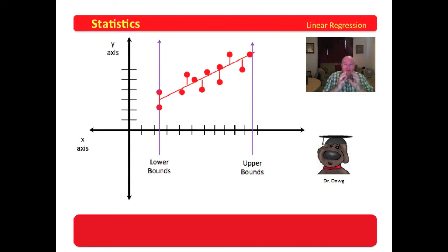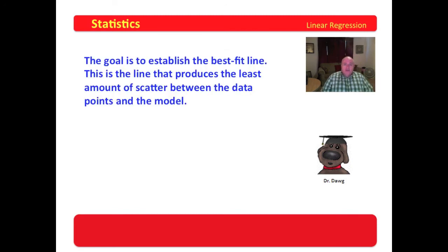When we look for the best fit line, we are looking for a line to minimize the distances between the data points and the linear model. The goal is to establish the best fit line. This is the line that produces the least amount of scatter between the data points and the model.